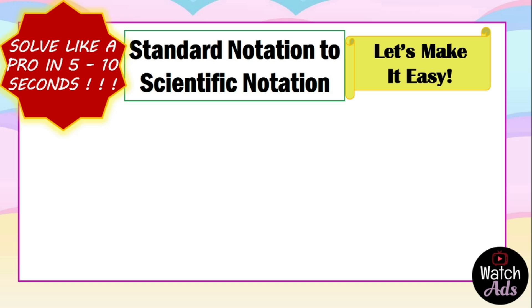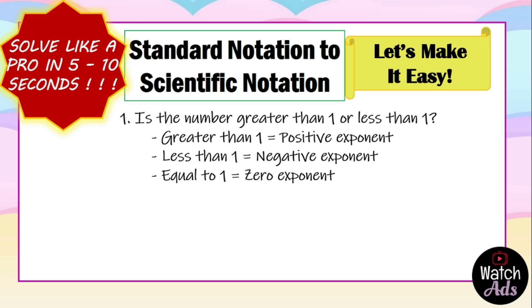In converting standard notation to scientific notation, you have points to remember. First, ask yourself: is the number greater than one or less than one? The number I'm talking about is the standard notation. If it is greater than one, then the exponent is positive. If it is less than one, the exponent is negative. If it is equal to one, the exponent is zero. Remember that any number or base raised to zero is equal to one, and any number or base raised to one is equal to the base or the number itself.